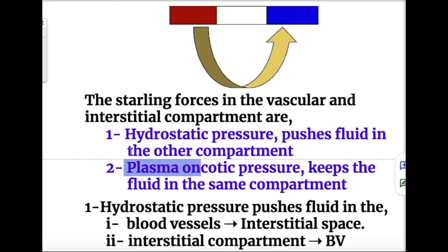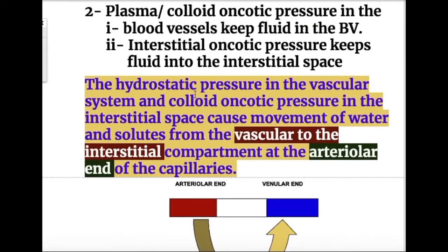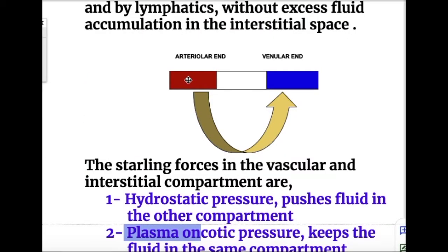Hydrostatic pressure pushes fluid into the other compartment, whereas plasma oncotic pressure keeps the fluid in the same compartment. The hydrostatic pressure in the blood vessel pushes fluid into the interstitial space, while the hydrostatic pressure in the interstitial compartment pushes fluid back into the blood vessel. Plasma oncotic pressure in the blood vessel keeps fluid in the vessel, and plasma osmotic pressure in the interstitial spaces keeps fluid in the interstitial spaces.